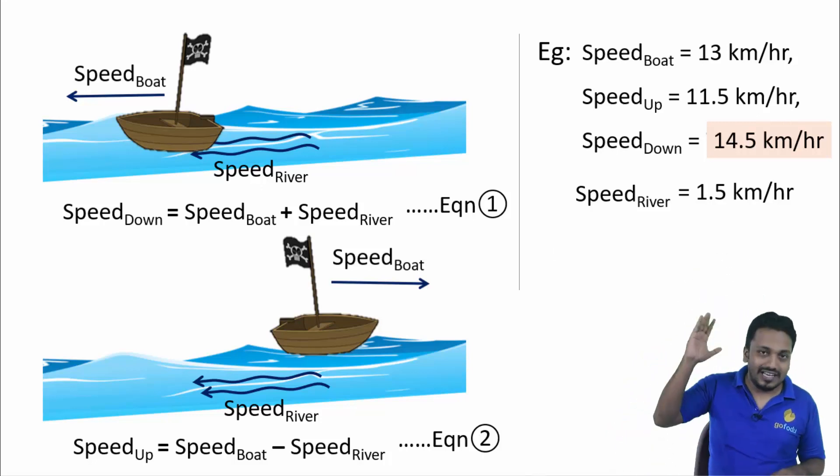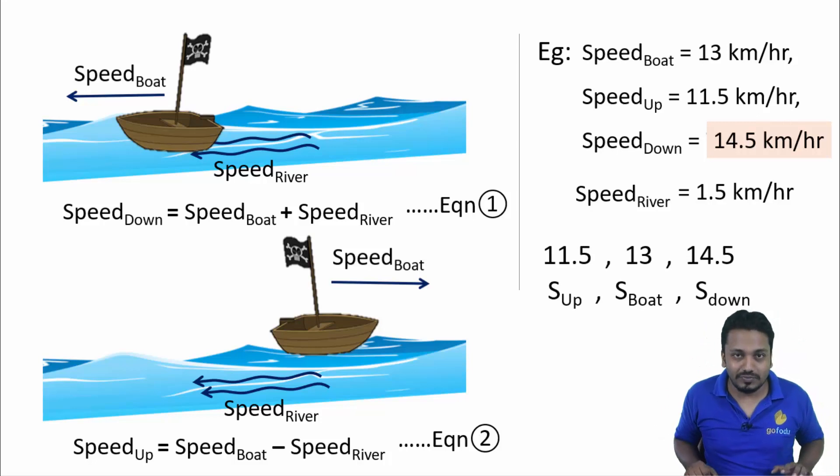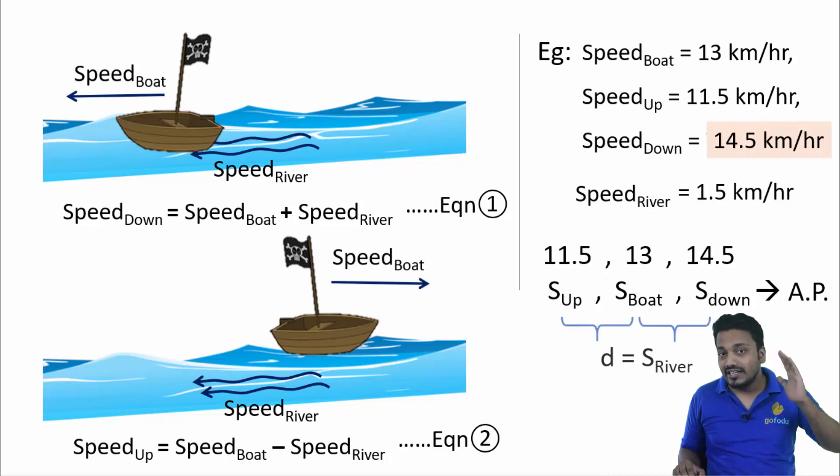If you haven't noticed already, these speeds are and will always be in arithmetic progression with the common difference being the speed of river. Keep this in mind, this is very important. Speed upstream, speed of stream, speed of boat and speed downstream will always be in arithmetic progression.